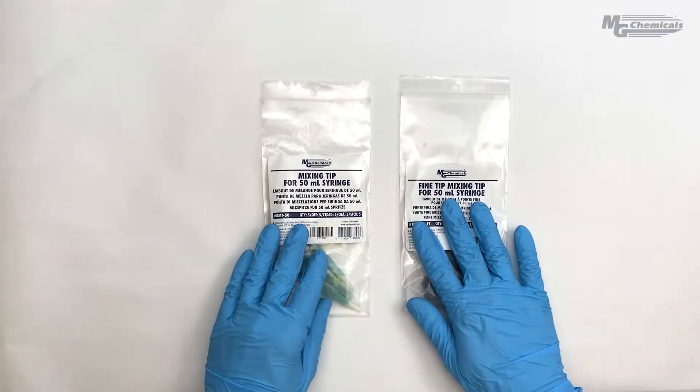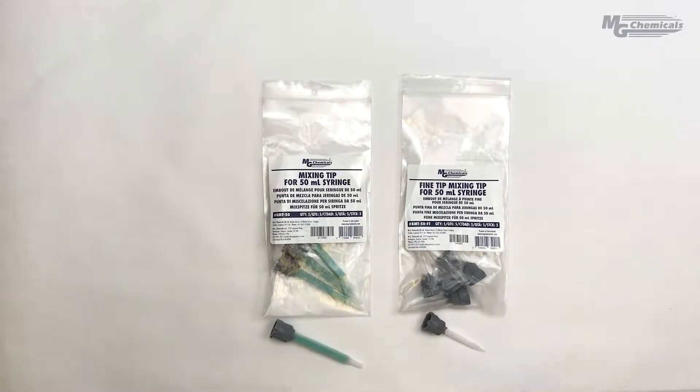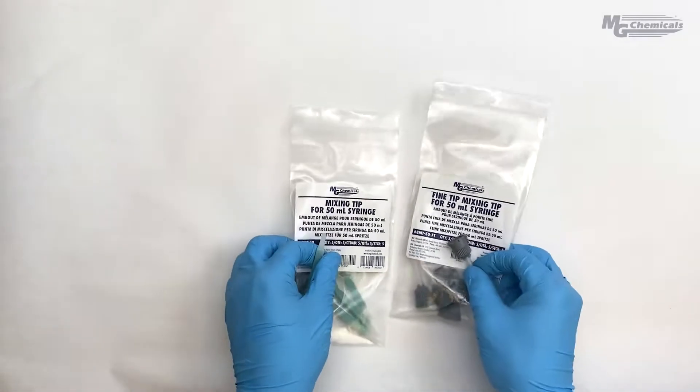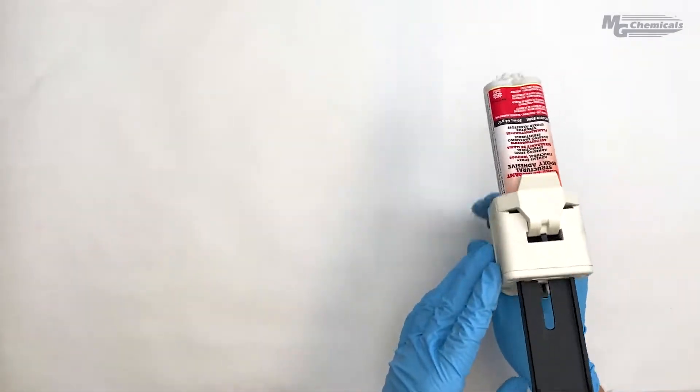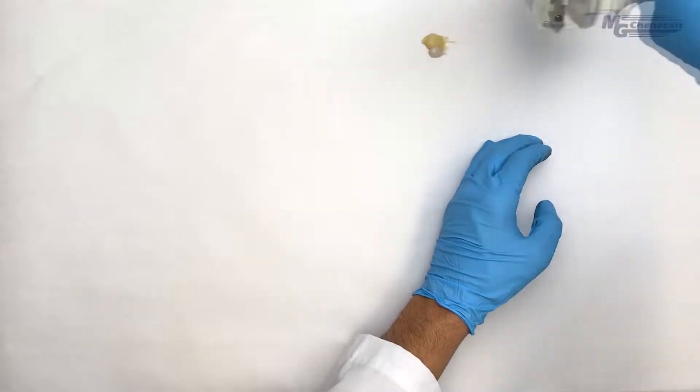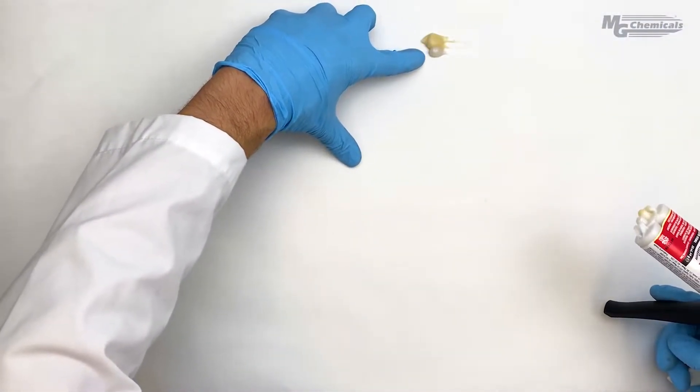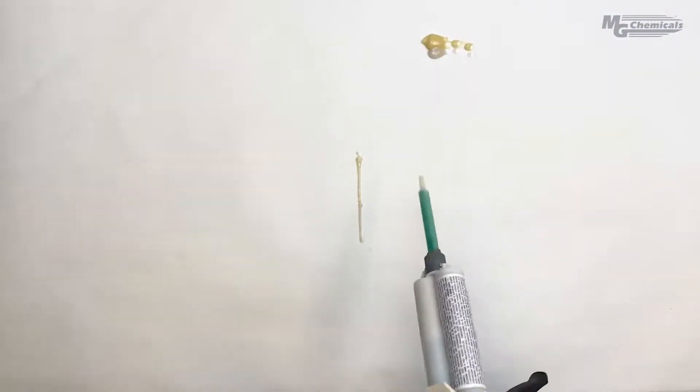There are two options of mixing tip for this cartridge which differ in terms of length, nozzle diameter, and number of elements. As we demonstrated in our second Tech Talk video, you must first bleed off some material to properly prime both components so you get the correct mix ratio.